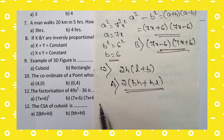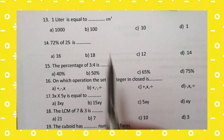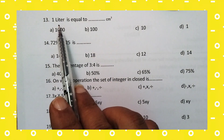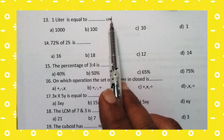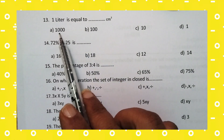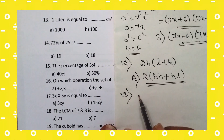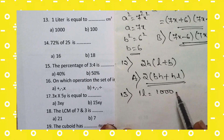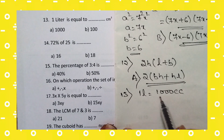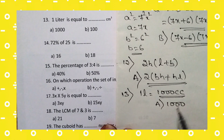13th question: 1 liter is equal to how many CC? 1 liter is equal to 1000 CC. For the 13th question, the right answer is option A: 1000 CC.